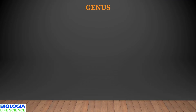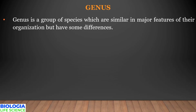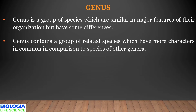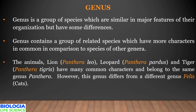As we climb up the taxonomic hierarchy, the next group after species is genus. Similar groups of species are put in one genus. Genus is a group of related species which have more characters in common compared to species of other genera. For example, lion (Panthera leo), leopard (Panthera pardus), and tiger (Panthera tigris) all belong to the same genus Panthera because they share some common characters.